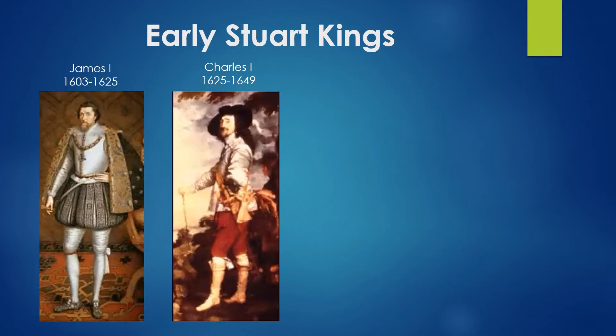Starting with our early Stuart kings: in 1603, James the First came to the throne following Elizabeth the First, who was the last Tudor monarch, very well loved, and had only met with Parliament nine times in 44 years. Interestingly, most of the Tudor monarchs knew how to work with Parliament to their advantage, even though they probably believed in absolute monarchy.